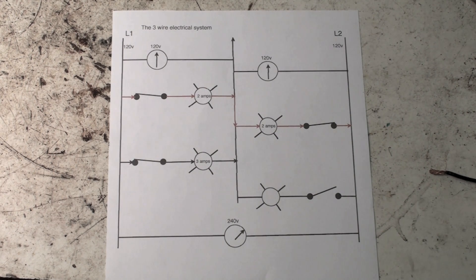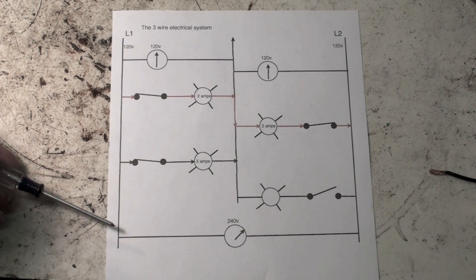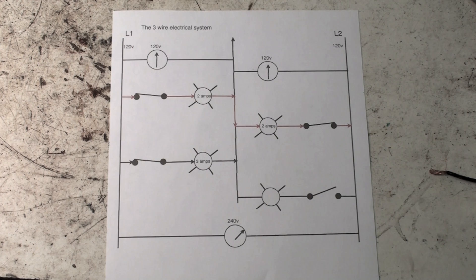If I go down to the bottom, I've got another voltmeter here. If I go from L1 to L2, I read 240 volts. So we have available two different voltages—we've got two hot lines, L1 and L2.